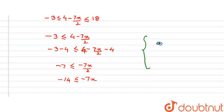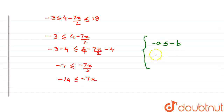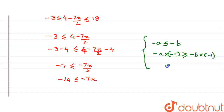We have a rule: if we want to remove the negative sign from an inequality, we multiply the inequality by minus 1. Whenever we multiply or divide an inequality by a negative integer, the inequality sign will change. So if I multiply both sides by minus 1, this inequality sign will change and we will get a greater than or equal to b.